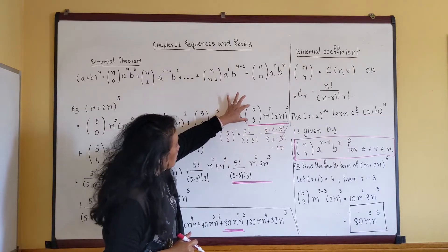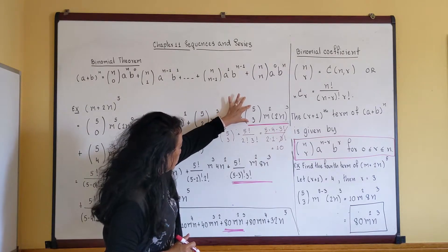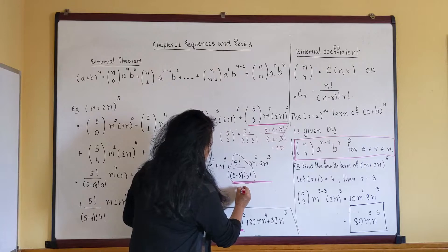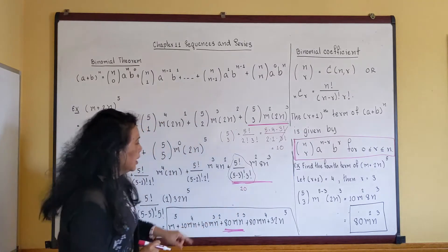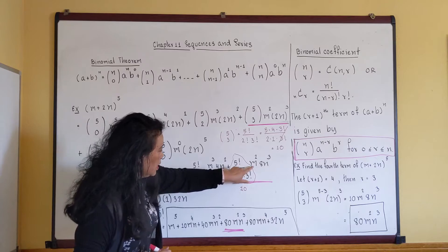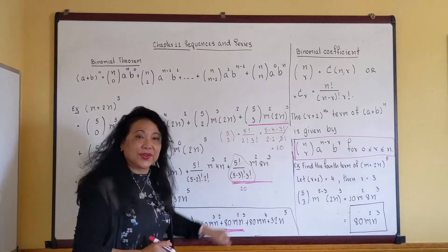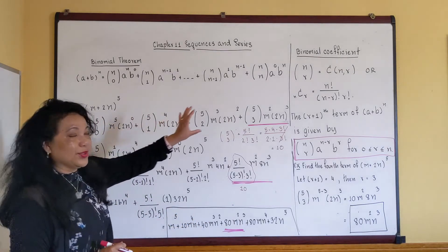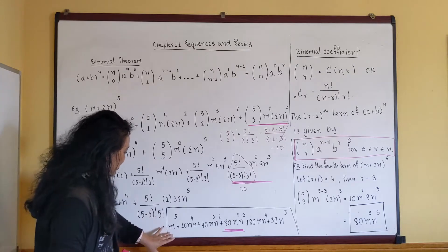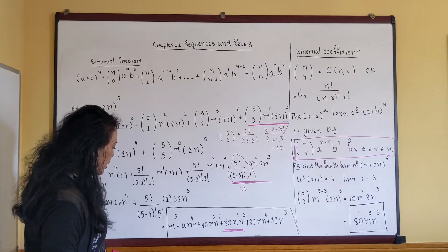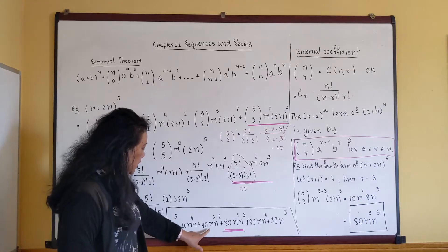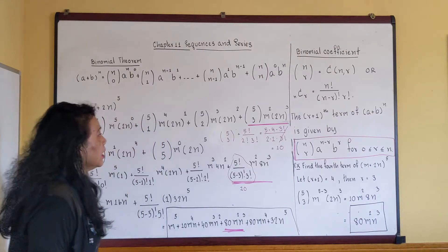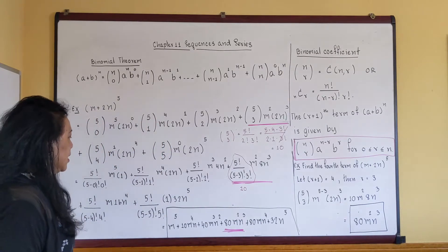So the binomial coefficient equals 10. Now, 10 times 8 is 80, giving m squared times n cubed for the fourth term. The full expansion begins: m to the fifth, plus 10m to the fourth times n, plus 40m cubed times n squared, and then the fourth term we just calculated, and so on.